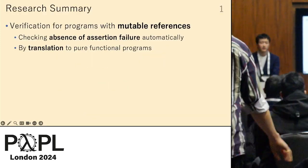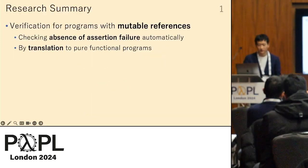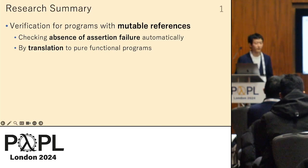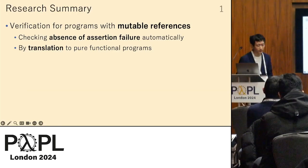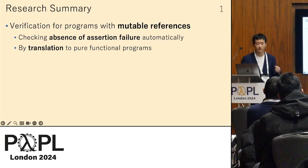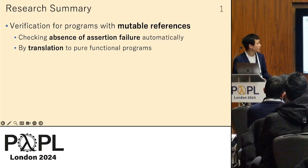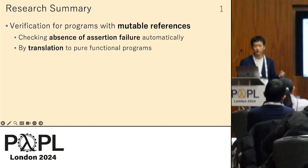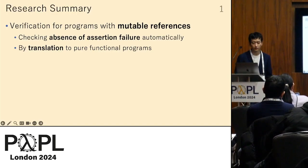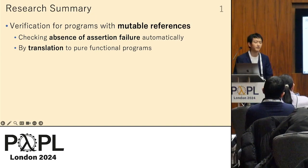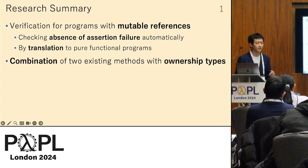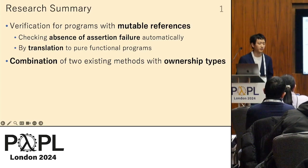Our research is about automatically verifying that a program with mutable references does not involve assertion failure at runtime. We solve this problem by translating the original program into more pure functional programs. The research combines two existing methods leveraging ownership types.